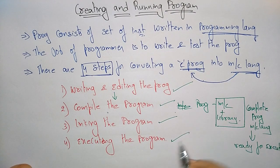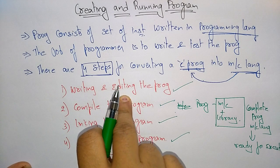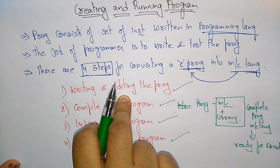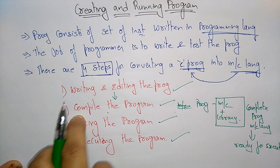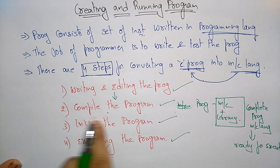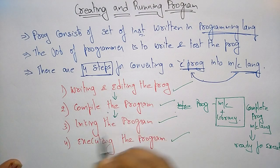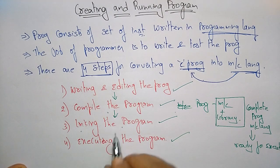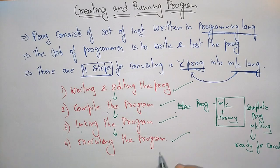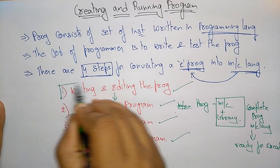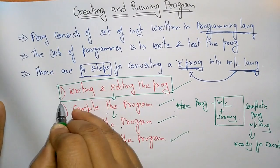So the program is ready for execution. To summarize: you write and edit the program in an English-like programming language, then compile it, then link it, and then execute it — and that execution produces the output of the program.